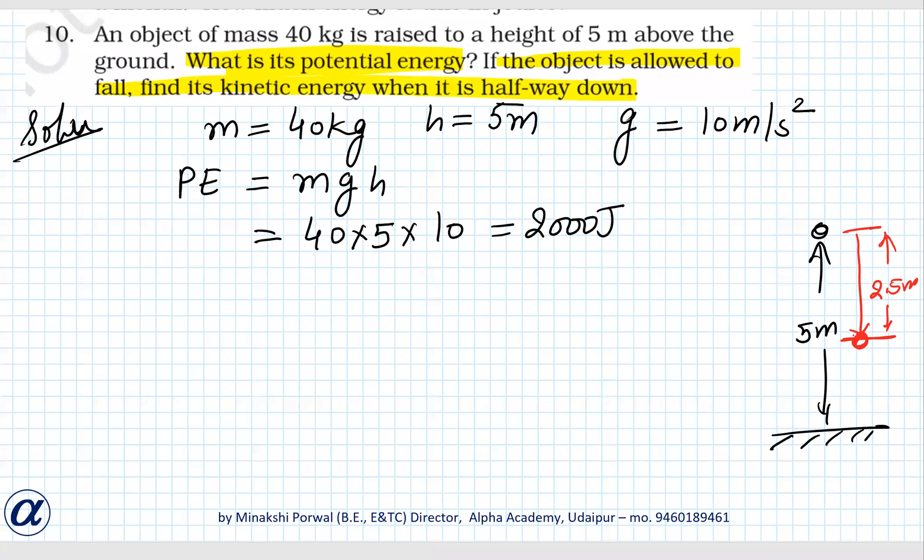Now for kinetic energy, we have formula half mv squared. That means we will need v squared for this. So v squared minus u squared equals 2gs. Whenever anybody is falling from certain height, we take initial velocity as 0. V squared we have to find, g is 10, and s is 2.5 meters.